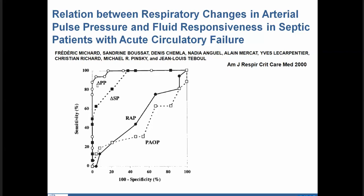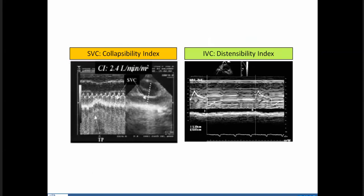Genui's group published a seminal paper on pulse pressure variation that opened this field for predicting fluid responsiveness using heart-lung interaction in ventilated patients. The area under the curve for pulse pressure variation is extremely good under the right physiological circumstances: patients completely ventilated, sedated, adapted to the ventilator, with no arrhythmias and tidal volumes of about 8 mL/kg. This context depends on physiology, not the specific monitor — it works whether you use an arterial pressure waveform, a cardiac output monitor, or inferior vena cava with echo.